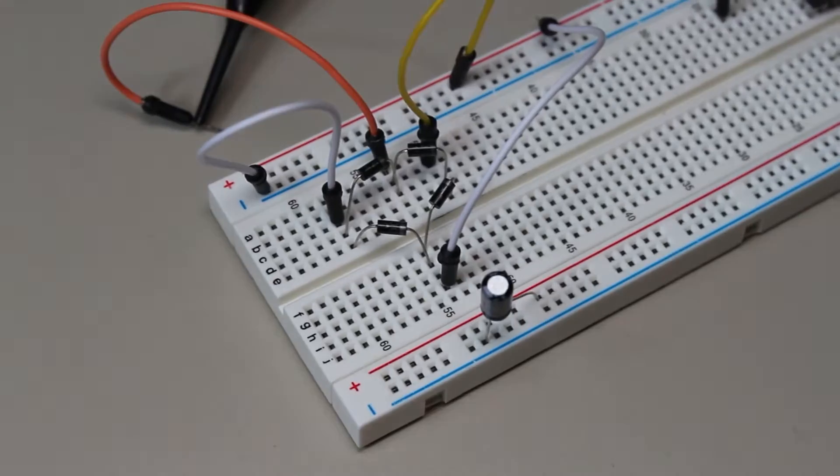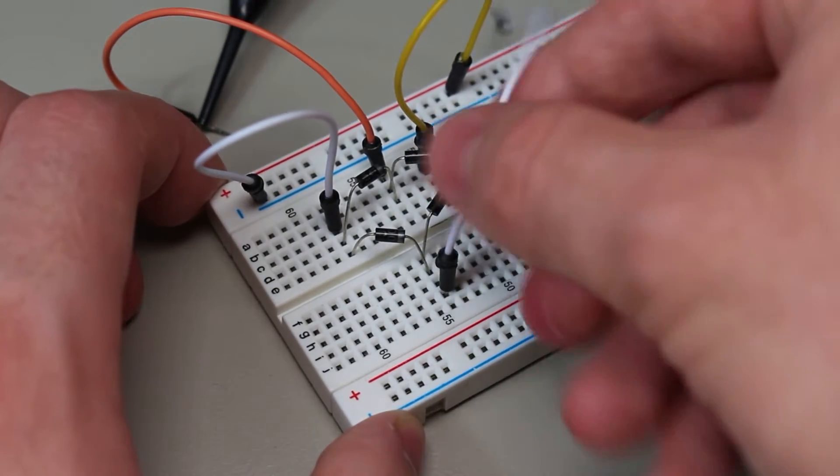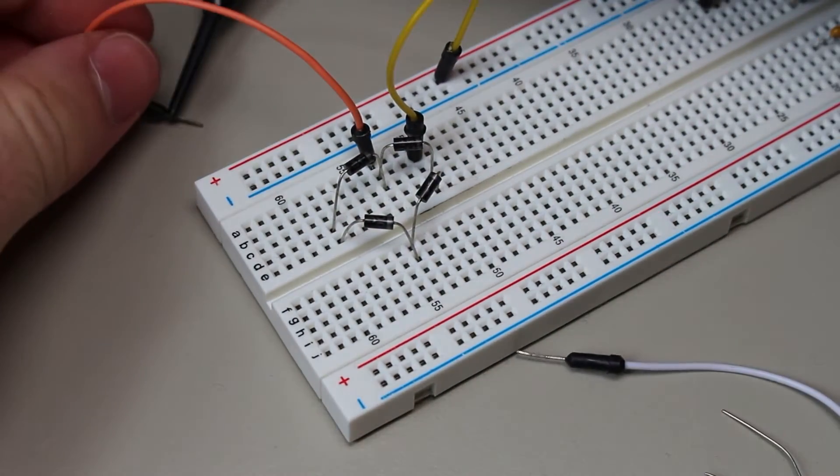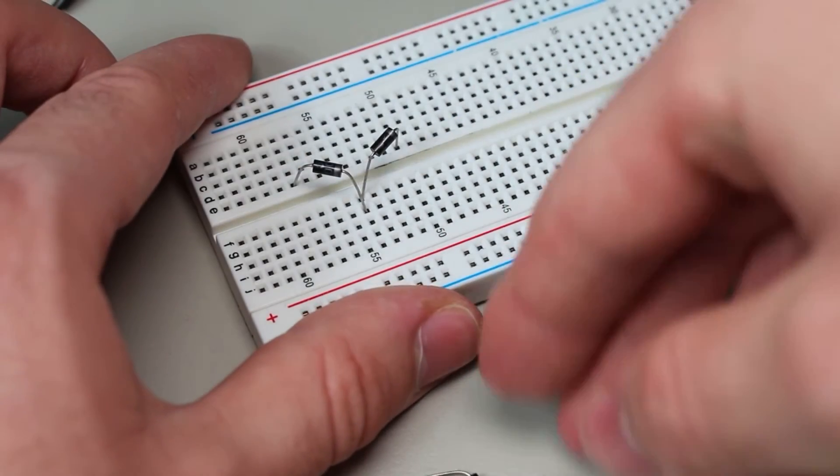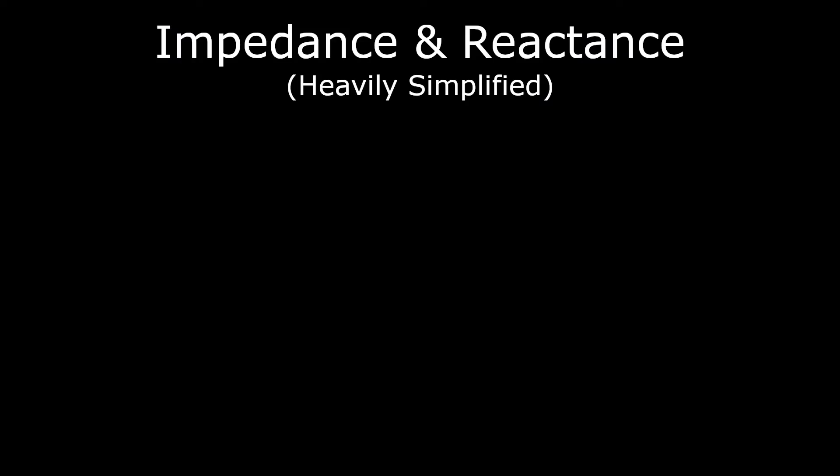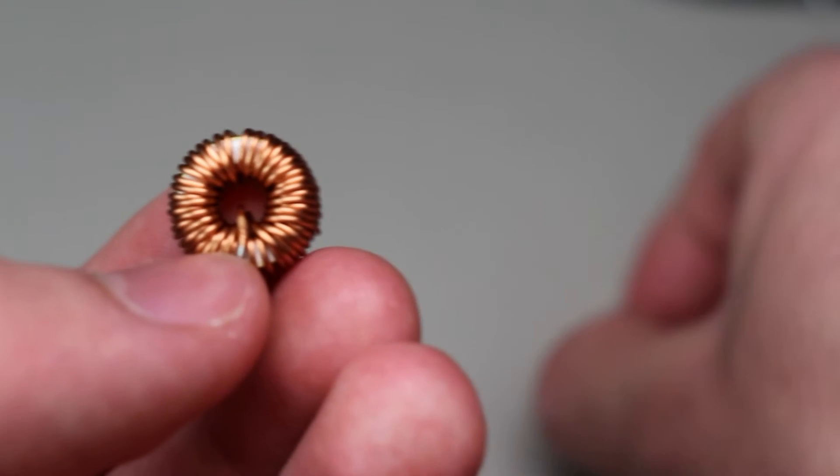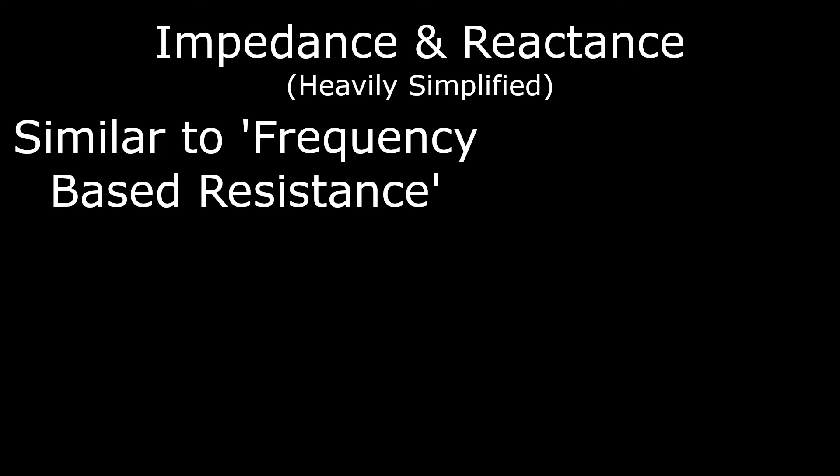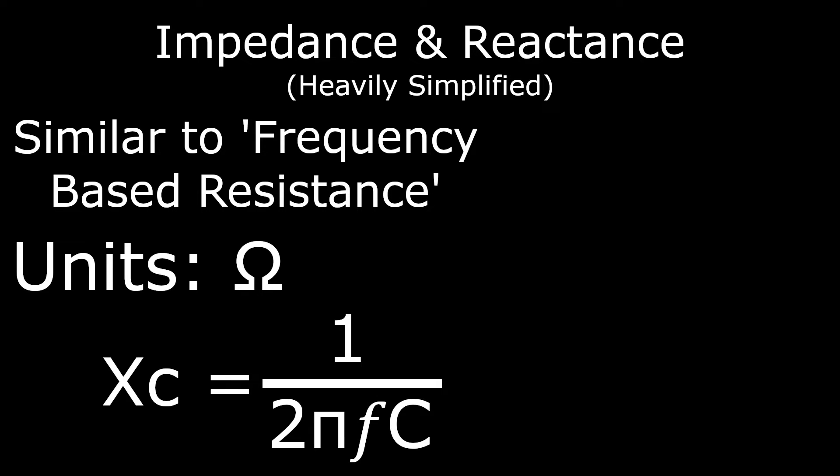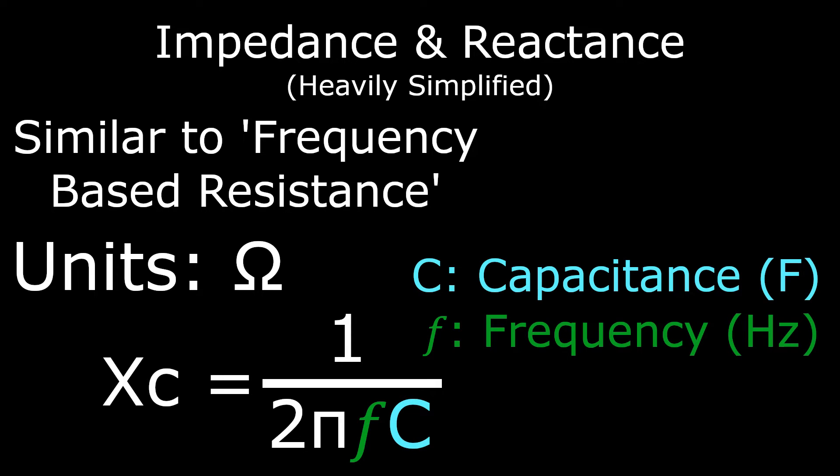So, now you've seen what capacitors can do from a DC perspective. But, things change a bit when AC gets involved. So far, we've been looking at capacitors from what we call the time domain. But, there's another method which is called the frequency domain. When using the frequency domain, we don't look at things over time. Instead, we see how they react with a given AC frequency. And, to use this frequency domain, I will have to introduce impedance and reactance. Basically, there are two types of reactance, capacitive and inductive. Since we are focusing on capacitors today, I'll leave inductors for another video. You can think of reactance as a sort of frequency-based resistance, and its unit is in ohms. For capacitors, here is the reactance equation: 1 over 2 pi fc, where f is the frequency in hertz, and c is the capacitance in farads.